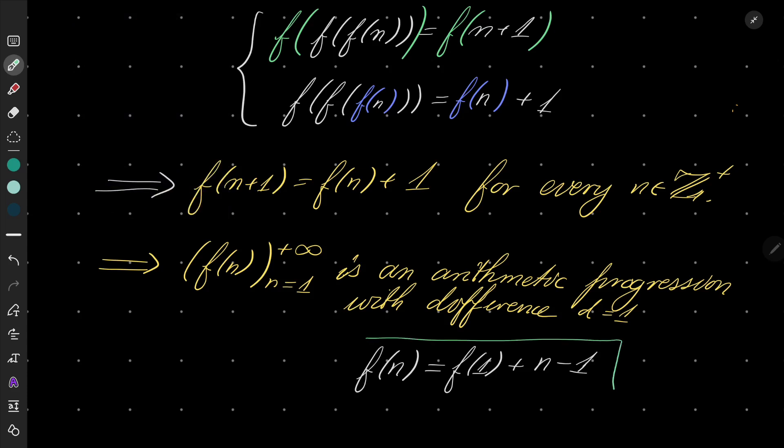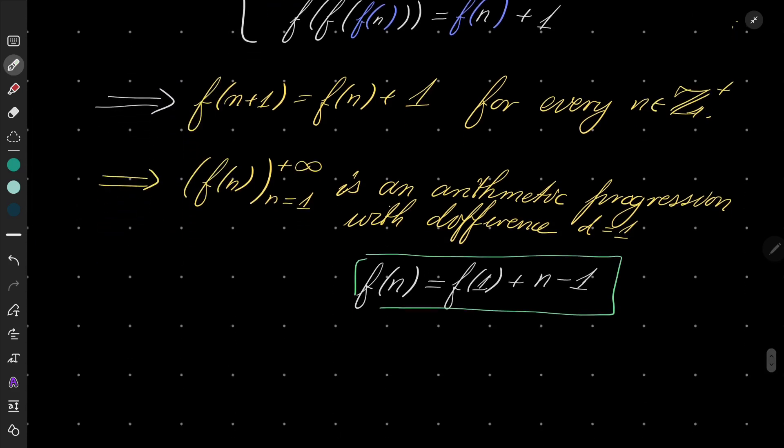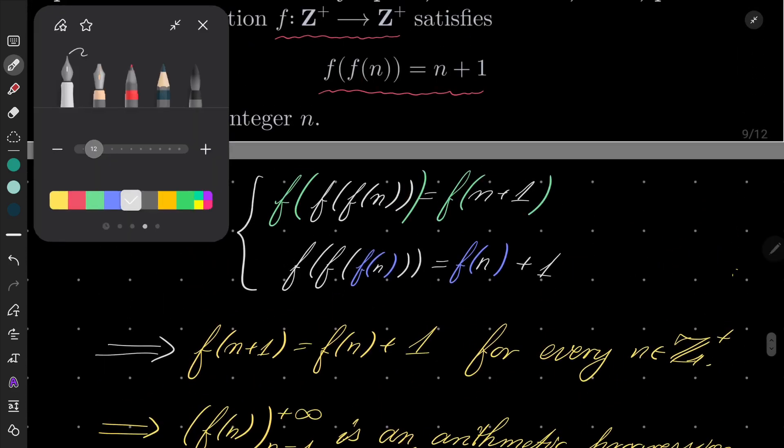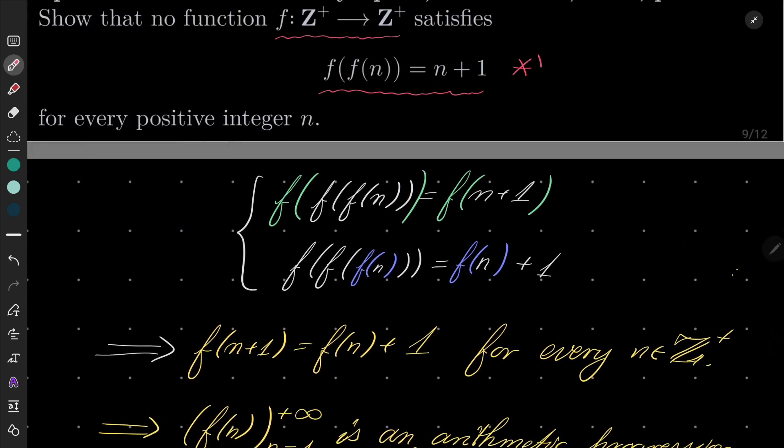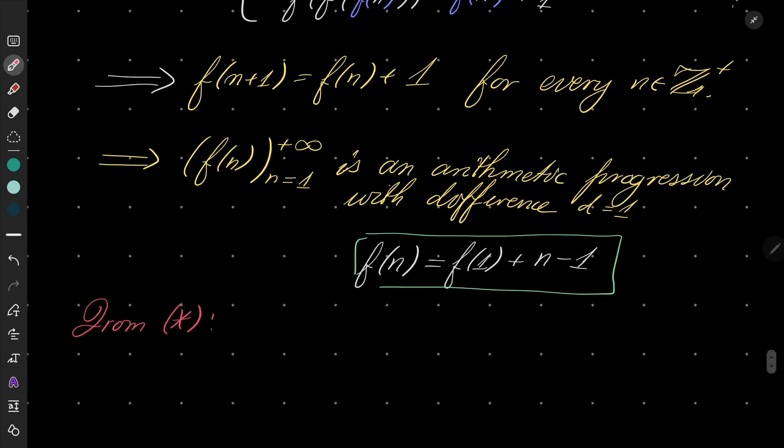Now we have this formula, so let's take this formula and plug it back into our original equation, namely this one: f(f(n)) should equal n plus 1. From our condition we get the following.